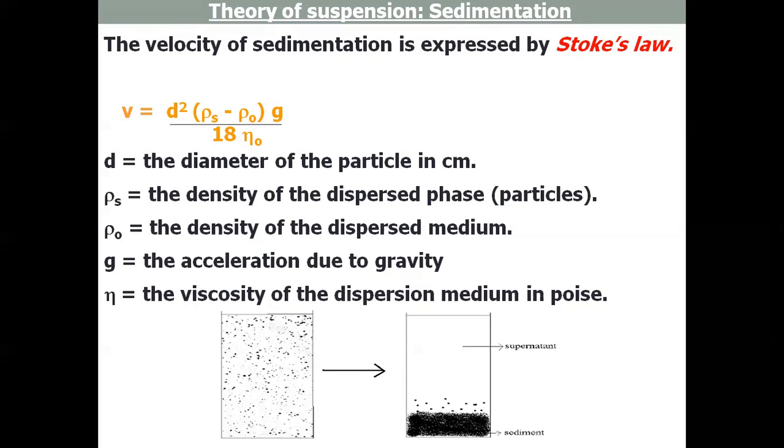It says that the rate of sedimentation can be decreased by increasing the viscosity of the dispersion medium, as it is inversely proportional. This is the diagram showing the particles first suspended, and then later they sediment and form two different layers: sediment and supernatant.